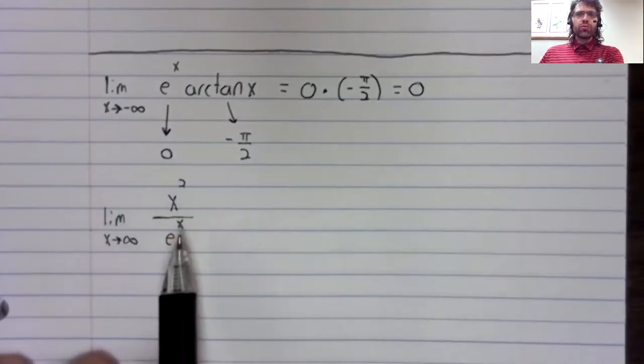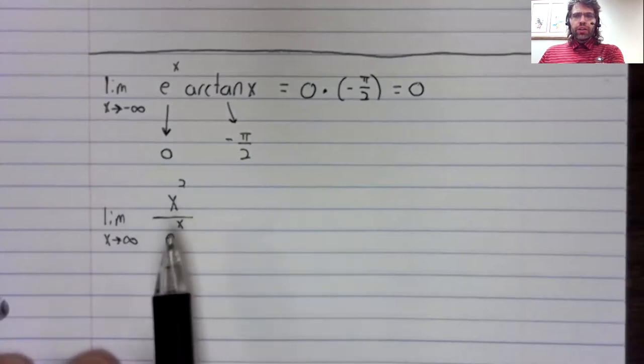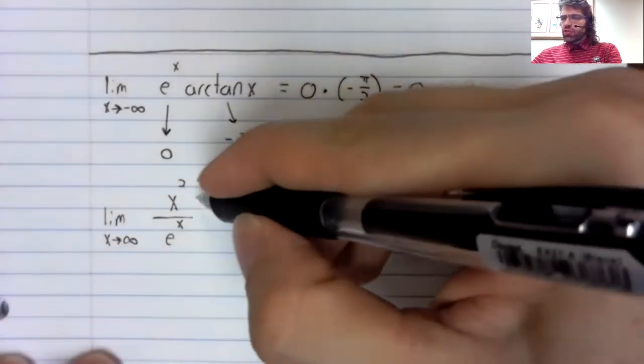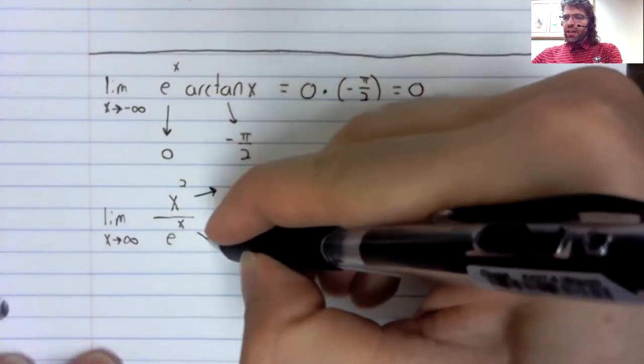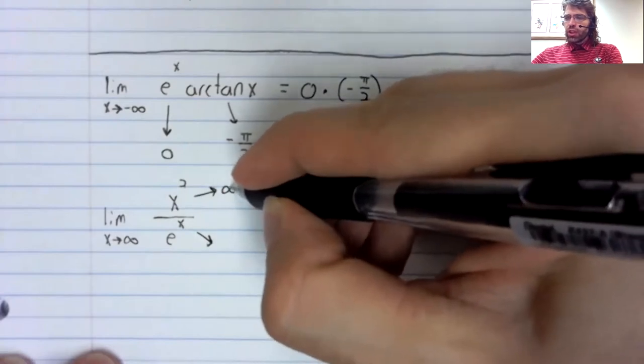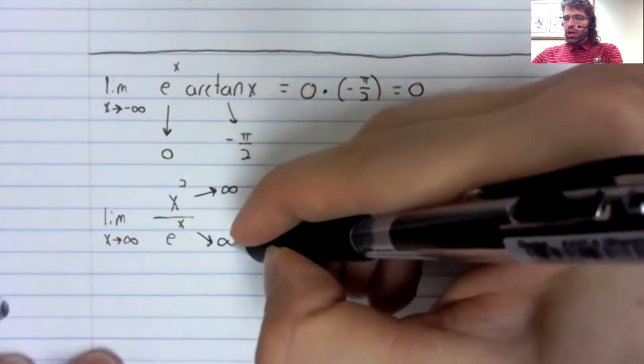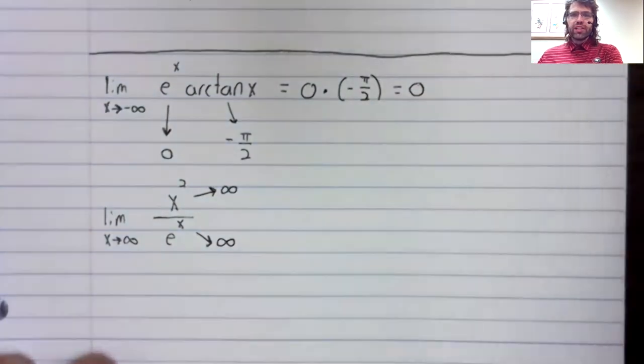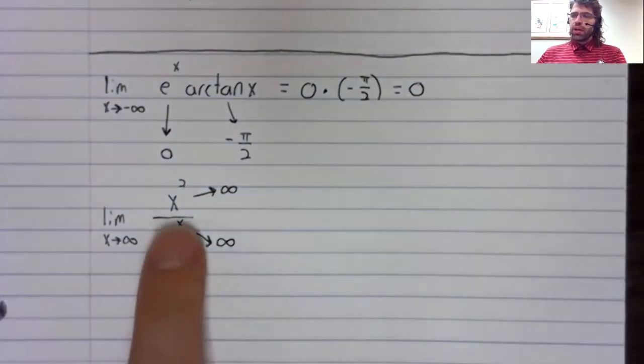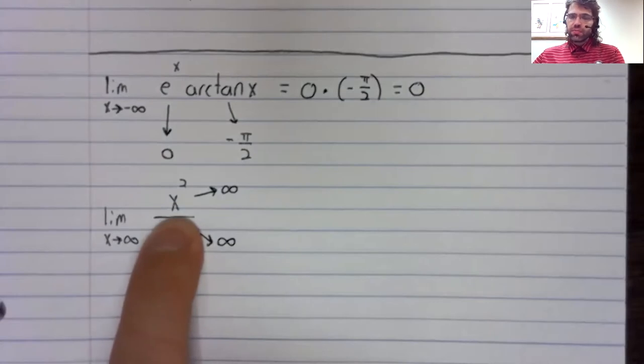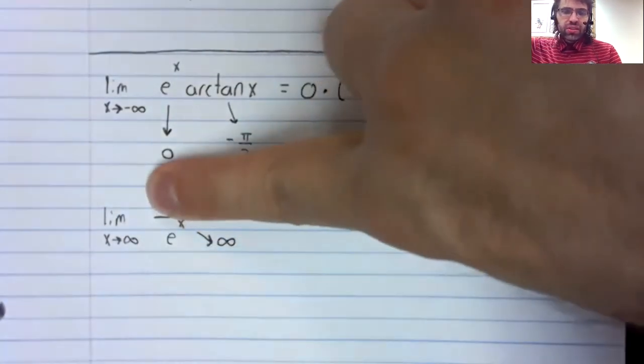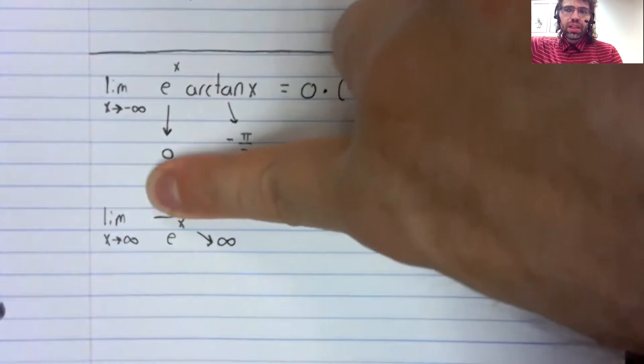but I can't use the quotient rule. And the reason I can't use the quotient rule is that neither the numerator nor the denominator are going to a real number. This limit doesn't exist. And this limit doesn't exist.